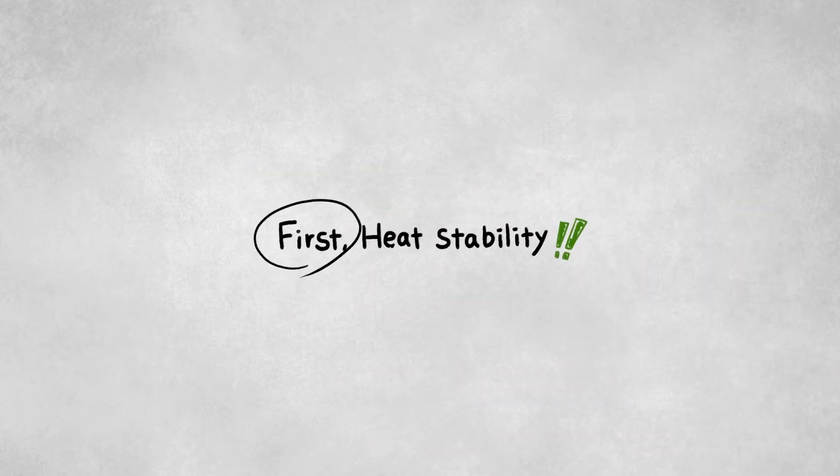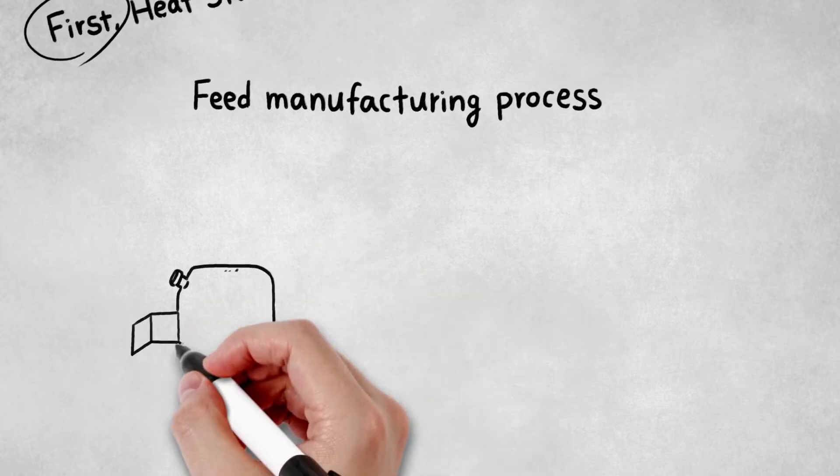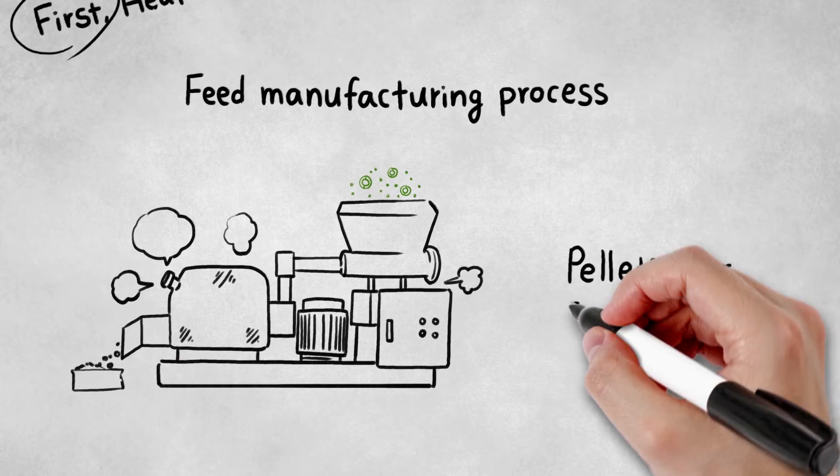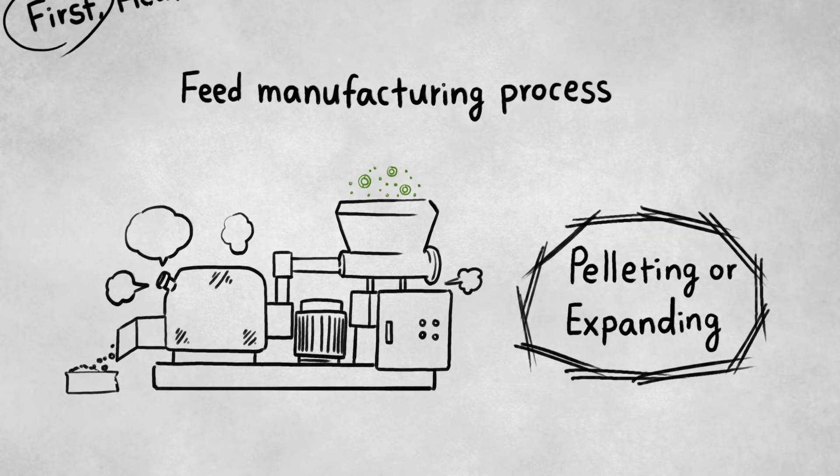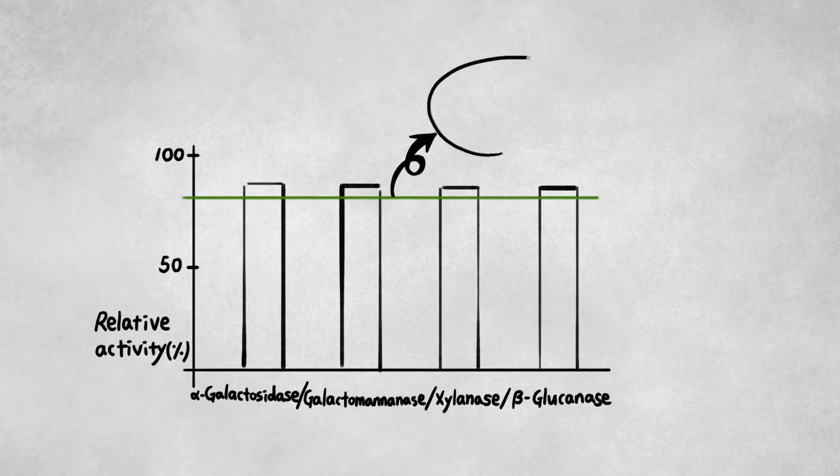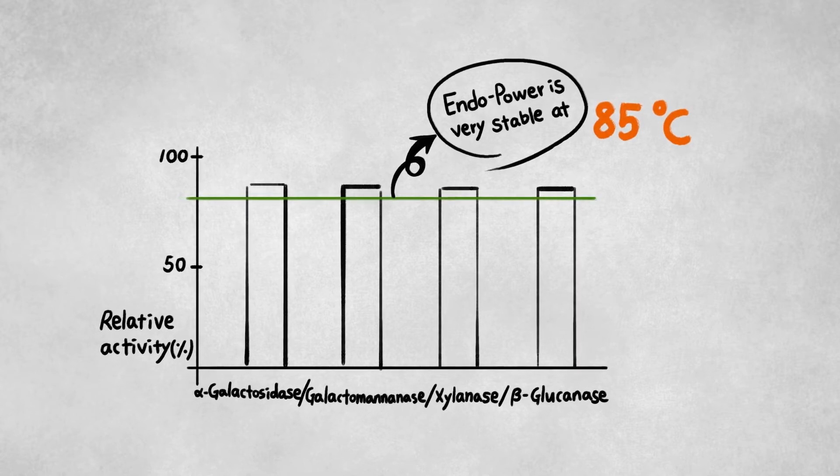The first factor is heat stability. During feed manufacturing process, such as pelleting and expanding, enzyme is likely to be exposed to high temperatures. Therefore, it is important for feed enzyme to be stable even at high temperature conditions.